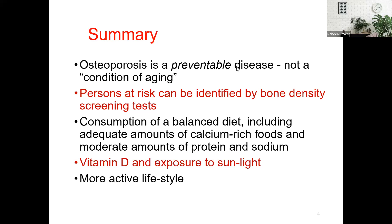Osteoporosis is a preventable disease. Although it is considered an aging condition because we more commonly observe it in older people, younger people can also get osteoporosis due to an unbalanced diet. A balanced diet is very important, and that's why adequate intake of calcium through calcium-rich food sources is critical, along with proteins and sodium — but through natural food sources, not only by artificial means.